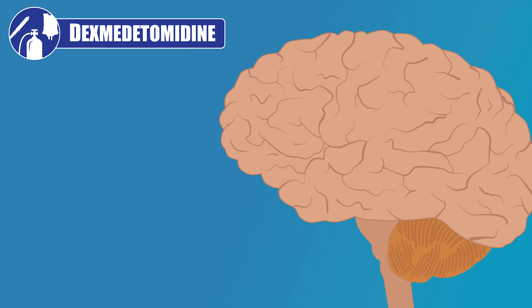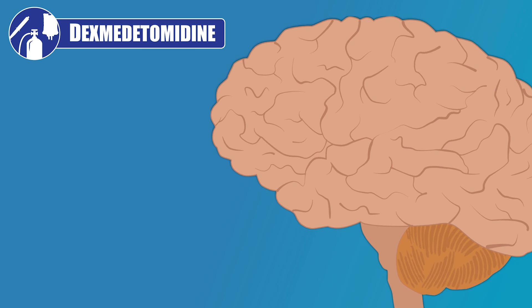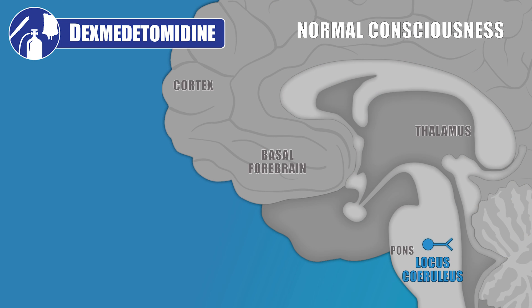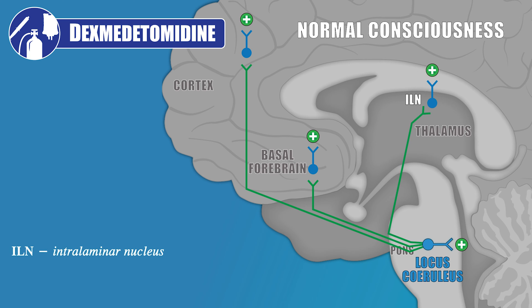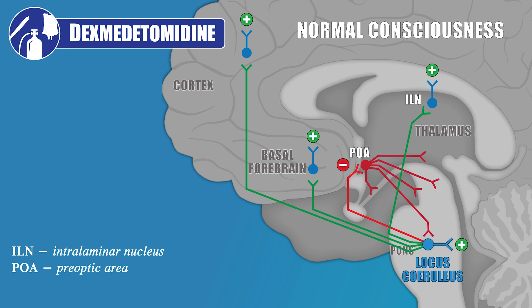To understand the anesthetic effects of dex, we need to talk about the locus coeruleus. The locus coeruleus provides key excitatory inputs to the cortex, basal forebrain, and intralaminar nucleus of the thalamus. It also provides inhibitory inputs to the preoptic area of the hypothalamus. The preoptic area, in turn, has inhibitory projections to the major arousal centers in the midbrain, pons, and hypothalamus.